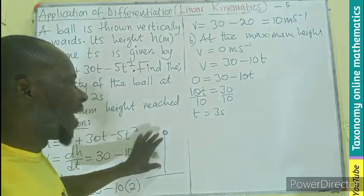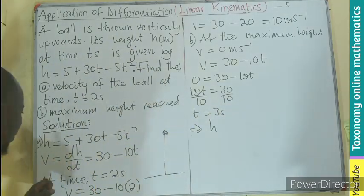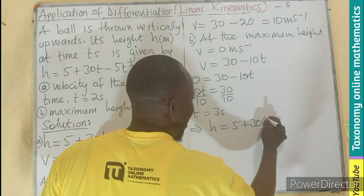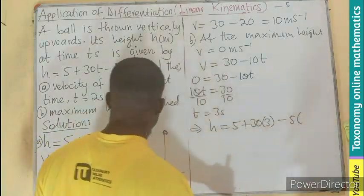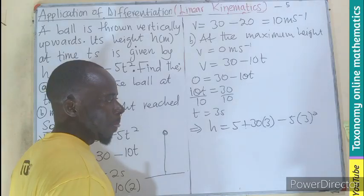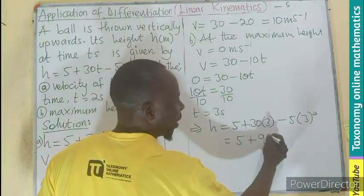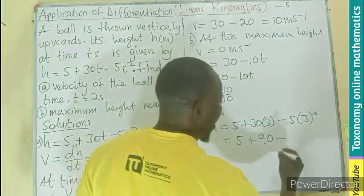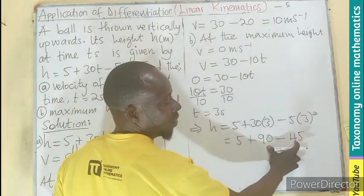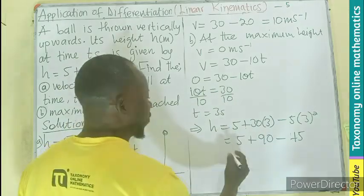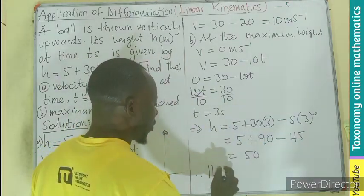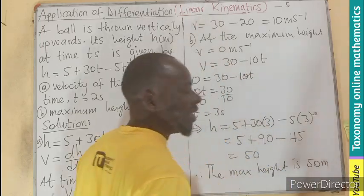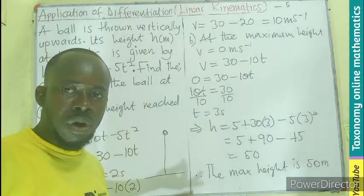So what is the height at t equals 3? The height h equals 5 plus 30 times 3 minus 5 times 3 squared. That gives us 5 plus 90 minus 5 times 9, which is 5 plus 90 minus 45. That equals 50. Therefore the maximum height is 50 meters. The ball will reach 50 meters before it begins to drop down.